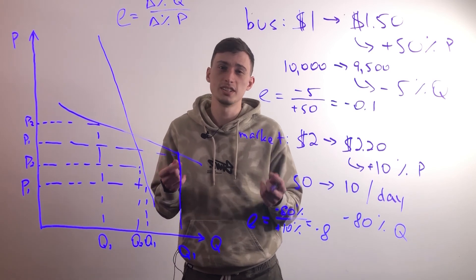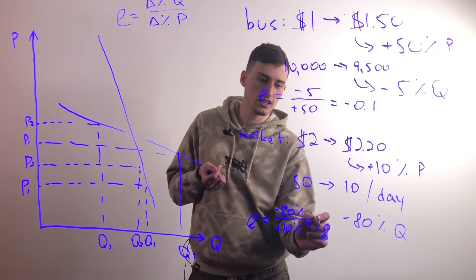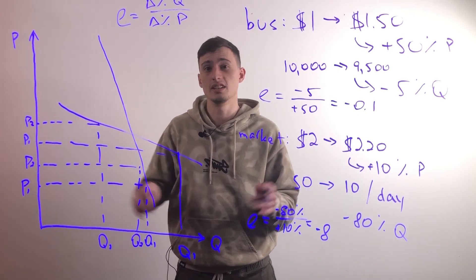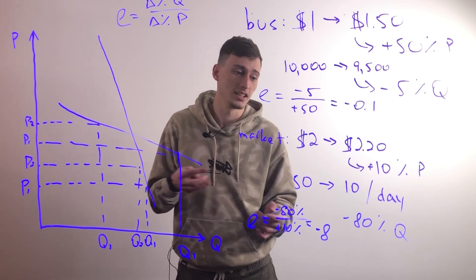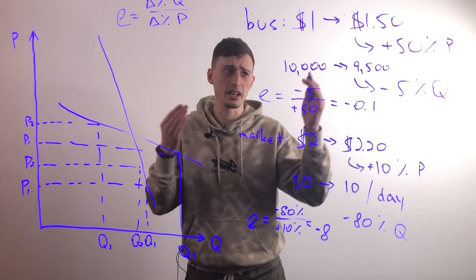As soon as one of them increases the price by just a little bit, he's going to see a huge drop in sales. That's why we call a number that's from negative one onwards to negative infinity elastic or highly elastic, because as soon as there's a small change in price, people stop buying the product.